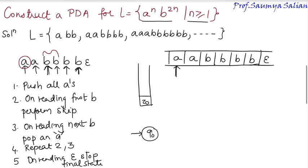On reading an A, perform push operation. On reading an A, stacked top with Z naught, perform push operation. Okay, so I put up a self loop here. On reading an A, on reading an A, perform push operation. On reading an A, stacked top now in A, perform push operation. So even if we had multiple A's over here, perform push operation.